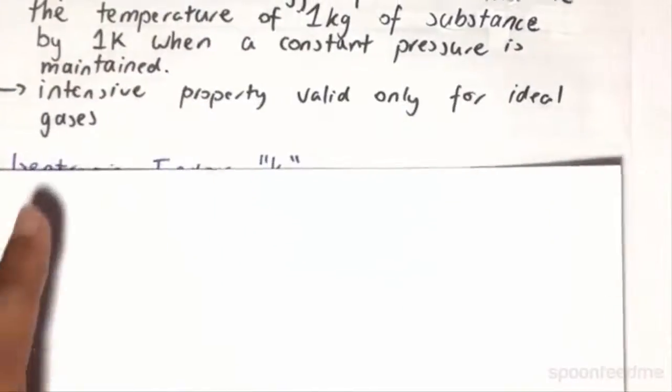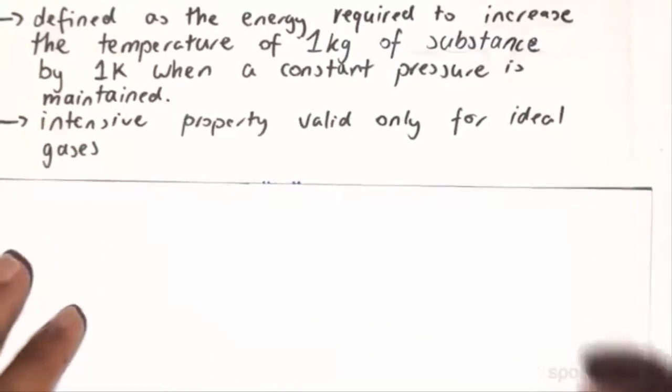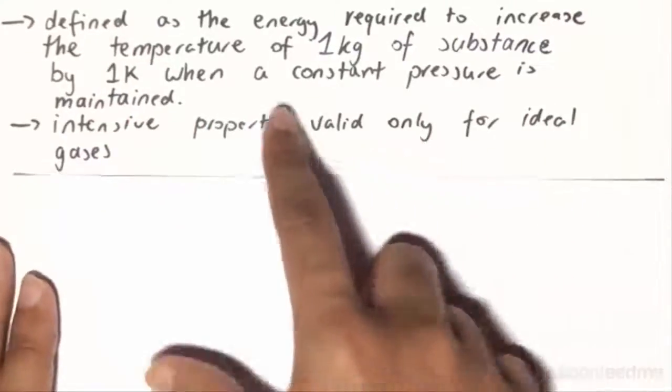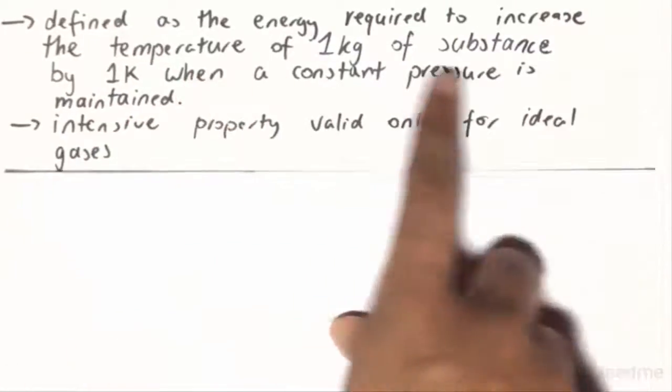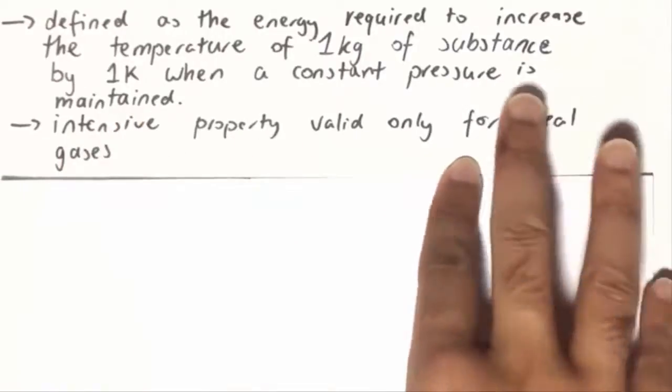So having looked at Cv, we look at Cp. Cp is slightly different. It is called the specific heat capacity at a constant pressure. And it is defined as the energy required to increase the temperature of one kilogram of substance by one Kelvin, and the key caveat here is when a constant pressure is maintained. It is also an intensive property and is only valid for ideal gases.